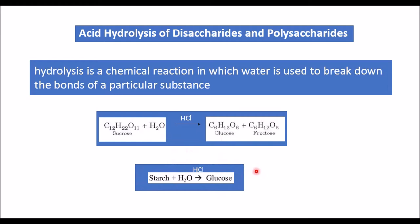In the body, enzymes in our saliva and from the pancreas carry out the hydrolysis. Complete hydrolysis produces glucose which provides about 50% of our nutritional needs.